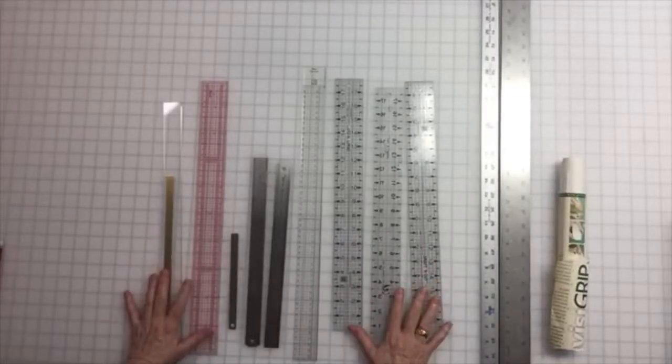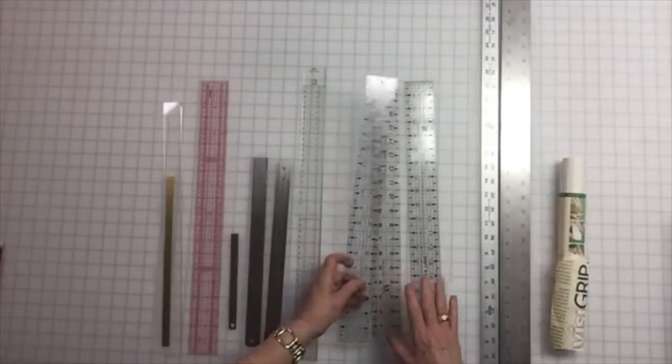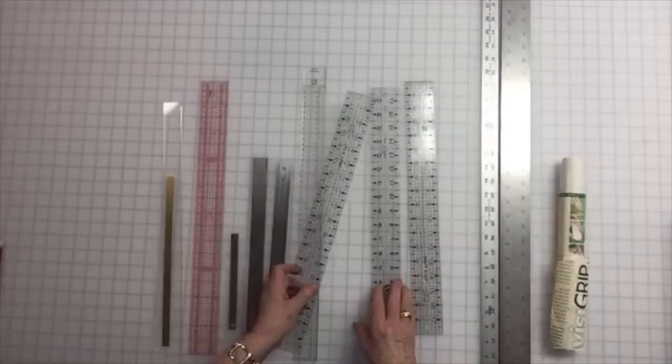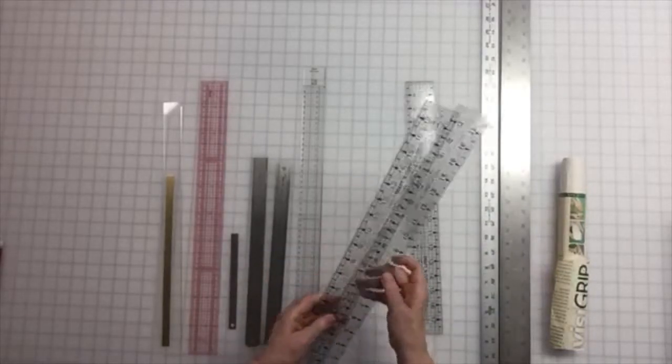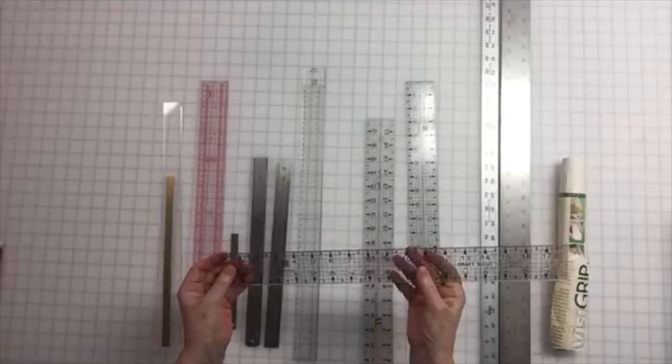We've got a wide assortment here. I want to start with three. I actually own three of these rulers. They are my favorite. They happen to be in imperial, so they are in inches.